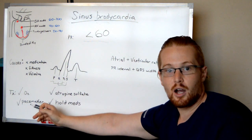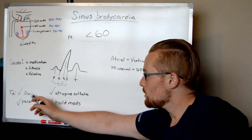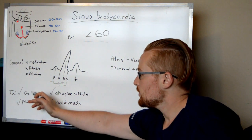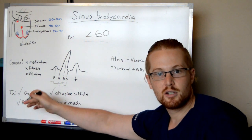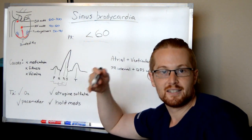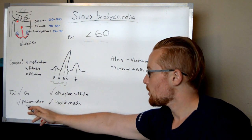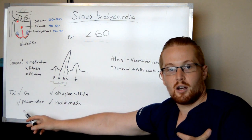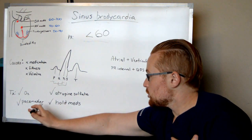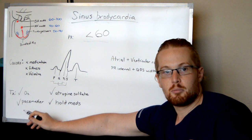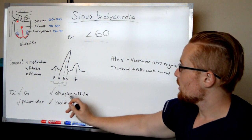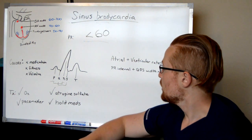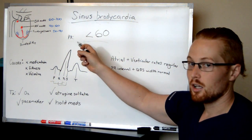The treatment is to identify the cause. If it's due to medication, you want to hold that medicine, especially if it's IV. If the patient has decreased cardiac output, it doesn't hurt to give them oxygen so that whatever the heart is beating is as effective as possible. Patients may need an external pacemaker affixed to the outside of the body, and if it's long term, they may need a permanent pacemaker down the road. The patient may also need atropine sulfate in an emergency, which will increase the heart rate. So that is sinus bradycardia — a low heart rate.